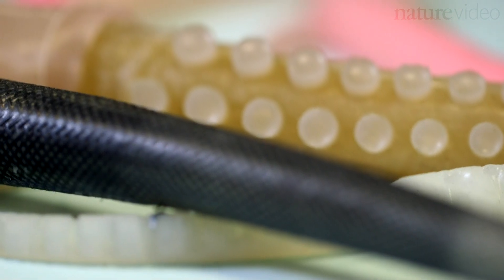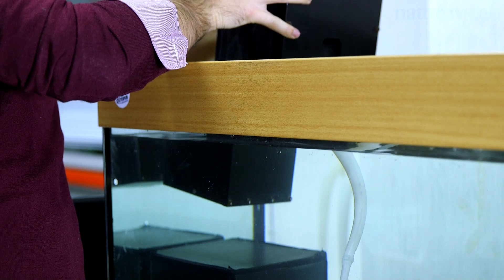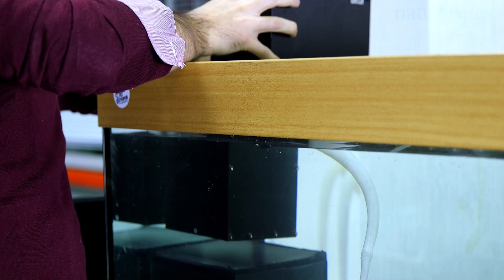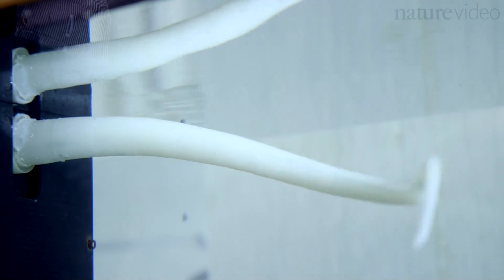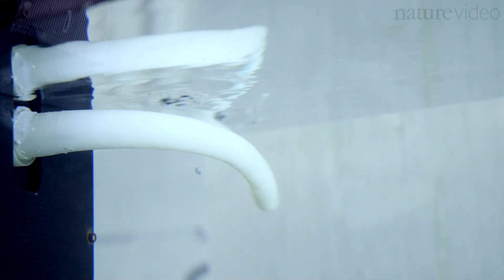The octopus arm has been designed to work in water, so the best way to see the performances of the arm is to see it operating underwater. The first time when we saw the arm inside water, we were amazed by the fact that the motion is so smooth and the behavior of the prototype is much closer to the natural counterpart.